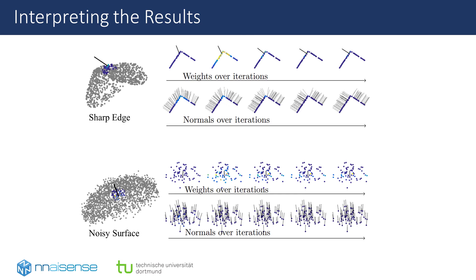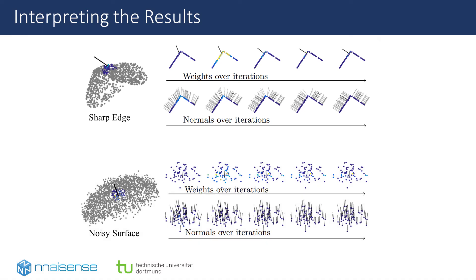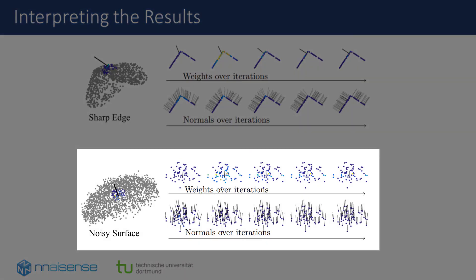We also evaluated the behavior of our method over multiple iterations on examples from the test data. The top shows a partial point cloud with a sharp edge. In iteration zero, which is just the unweighted plane fitting, the low-pass effect is visible. Over the course of iterations, the computed normals succeed in recovering the sharp surface. On the noisy surface in the bottom, the weights focus on the average plane and the normals become less noisy over iterations.